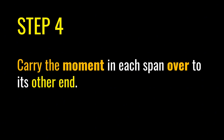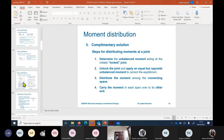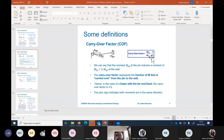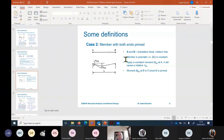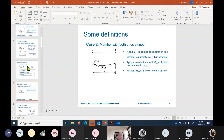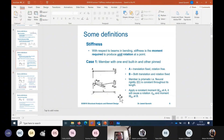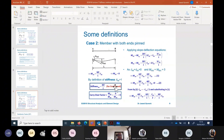Thirdly, distribute along connecting spans according to the distribution factor, and fourthly carry the moment over. Remember: the carryover factor is half when the far end is fixed, and zero when the far end is pinned. Stiffness is 4EI/L when the far end is fixed, and 3EI/L when the far end is pinned.